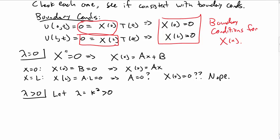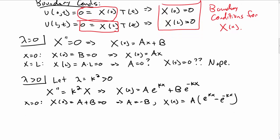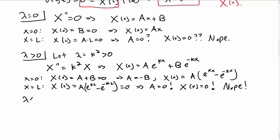Let's try lambda greater than zero; call it k squared so it's always positive. The solution is X(x) = a e^(kx) + b e^(-kx). At x = 0, we get a + b = 0, so a = -b, giving X(x) = a(e^(kx) - e^(-kx)). At x = L, we need a(e^(kL) - e^(-kL)) = 0, which forces a = 0, making X identically zero. Lambda > 0 also fails.